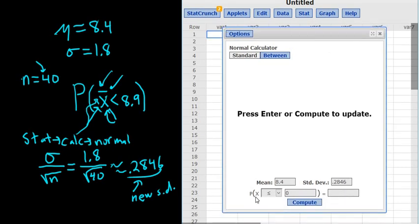And then it looks like it's less than. We only have a less than or equal to option here. It turns out for the normal distribution, less than is the same as less than or equal to. That's because the probability of equality is zero. So less than or equal to 8.9. We're changing the standard deviation because we have x-bar. Less than or equal to 8.9.